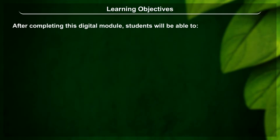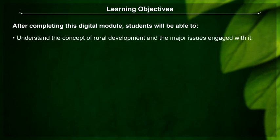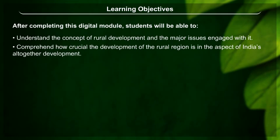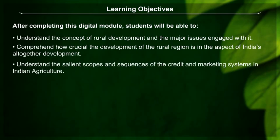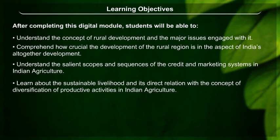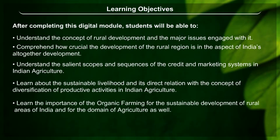Learning Objectives: After completing this digital module, students will be able to understand the concept of rural development and the major issues engaged with it, comprehend how crucial the development of the rural region is for India's overall development, understand the salient scopes and sequences of credit and marketing systems in Indian agriculture, learn about sustainable livelihood and its relation with diversification of productive activities, and learn the importance of organic farming for the sustainable development of rural areas of India and for the domain of agriculture as well.